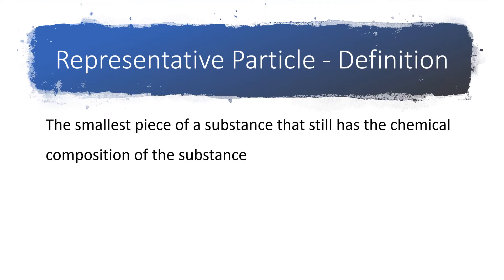The idea behind a representative particle is that it is the smallest piece of a substance that still has the chemical composition of that substance. Different types of substances have different smallest pieces, or representative particles.